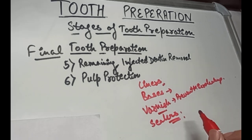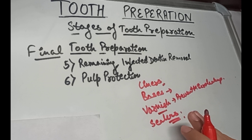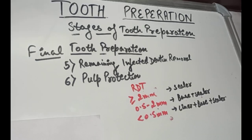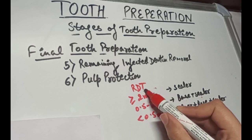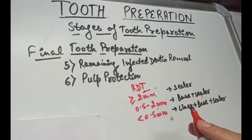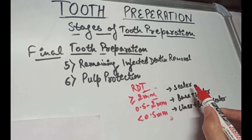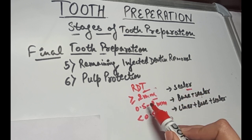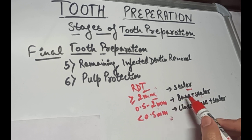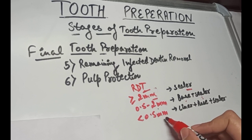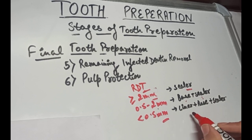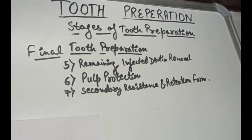Nowadays sealers are used under non-bonded restorations. Sealers occlude or seal the dentinal tubules, and amalgam restorations are sealed with gluma desensitizers. The choice of material is based on remaining dentine thickness — how far we are from the pulp. For amalgam: if remaining dentine thickness is ≥2 mm, sealers are used; if 0.5–2 mm, base along with sealers are used; if less than 0.5 mm, liners are used with base and sealers.